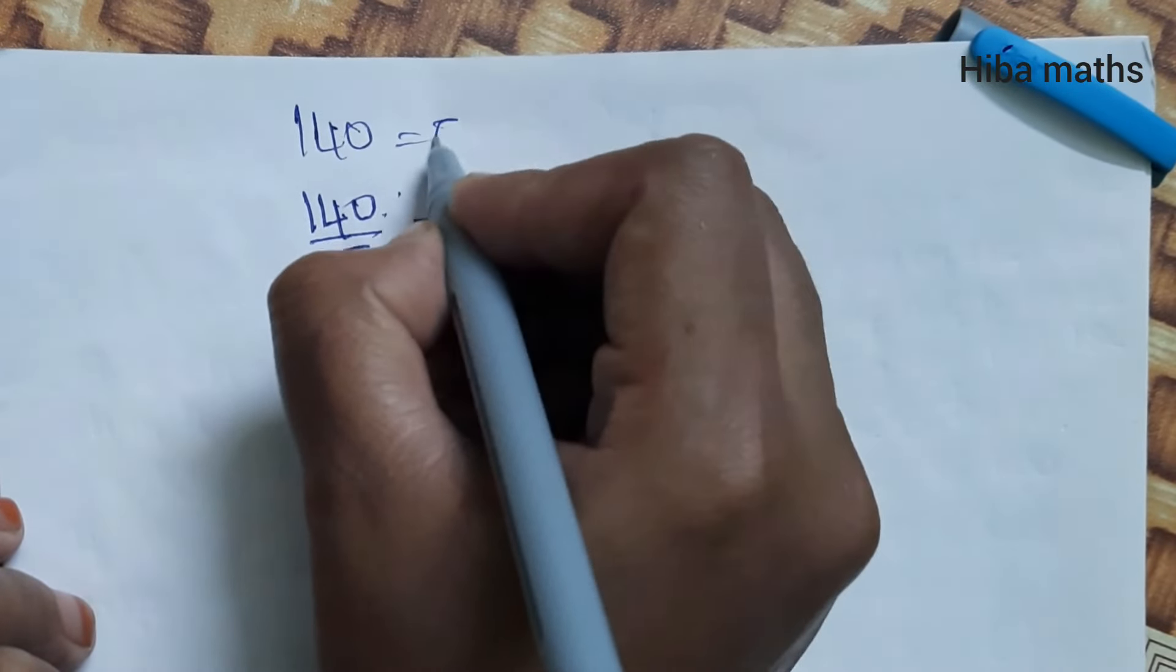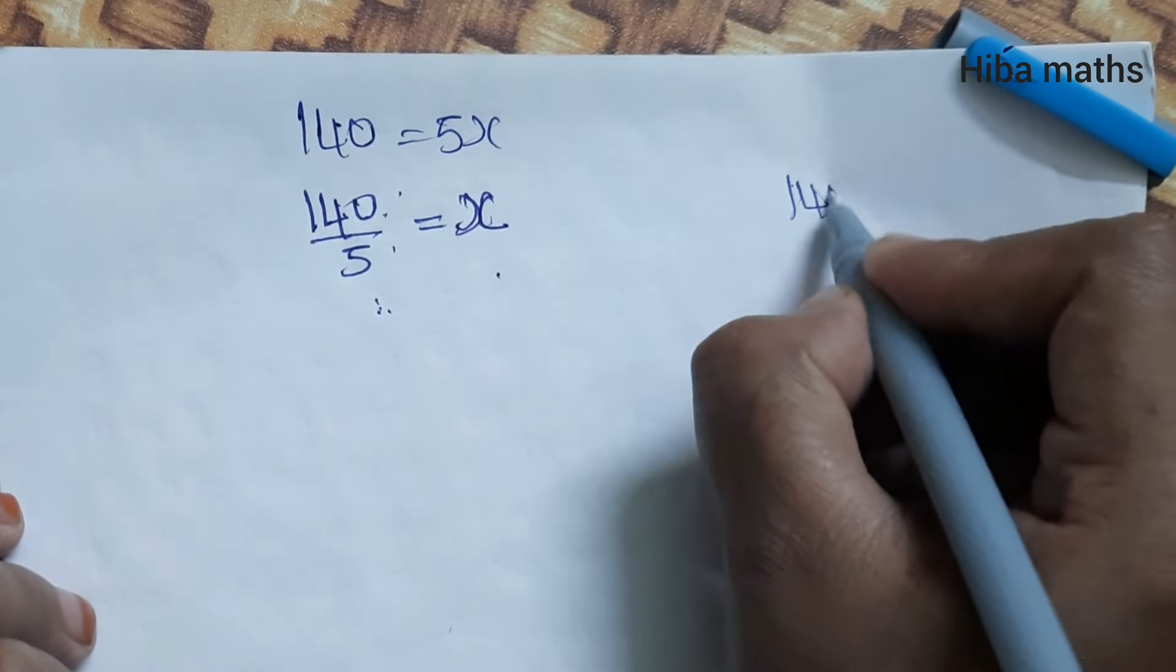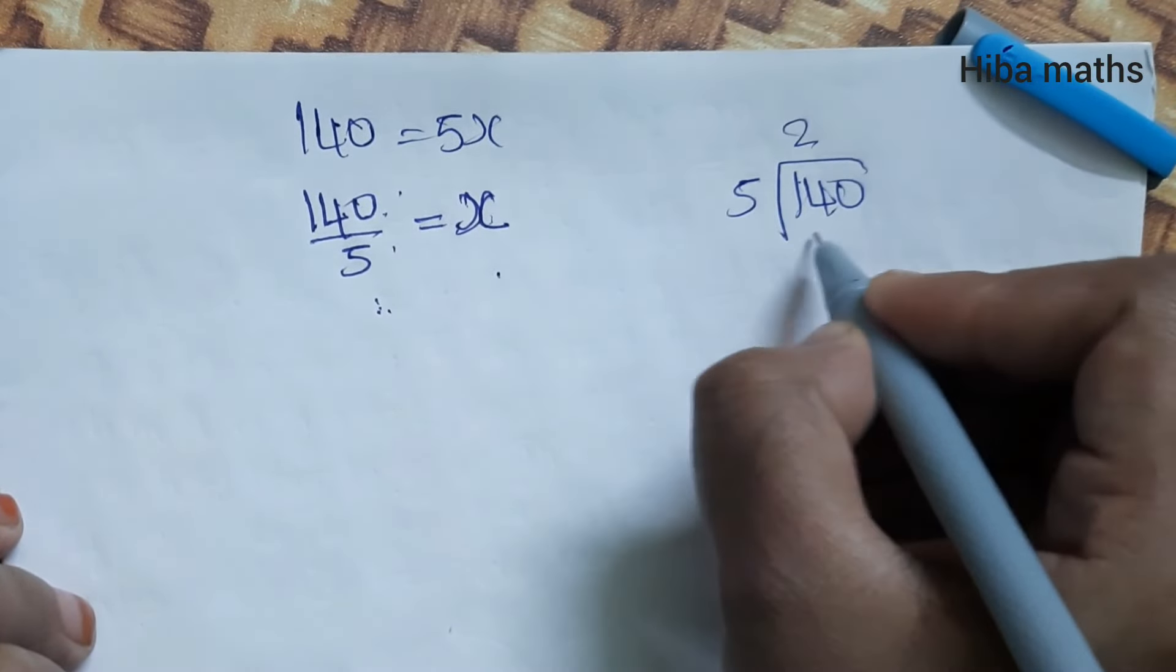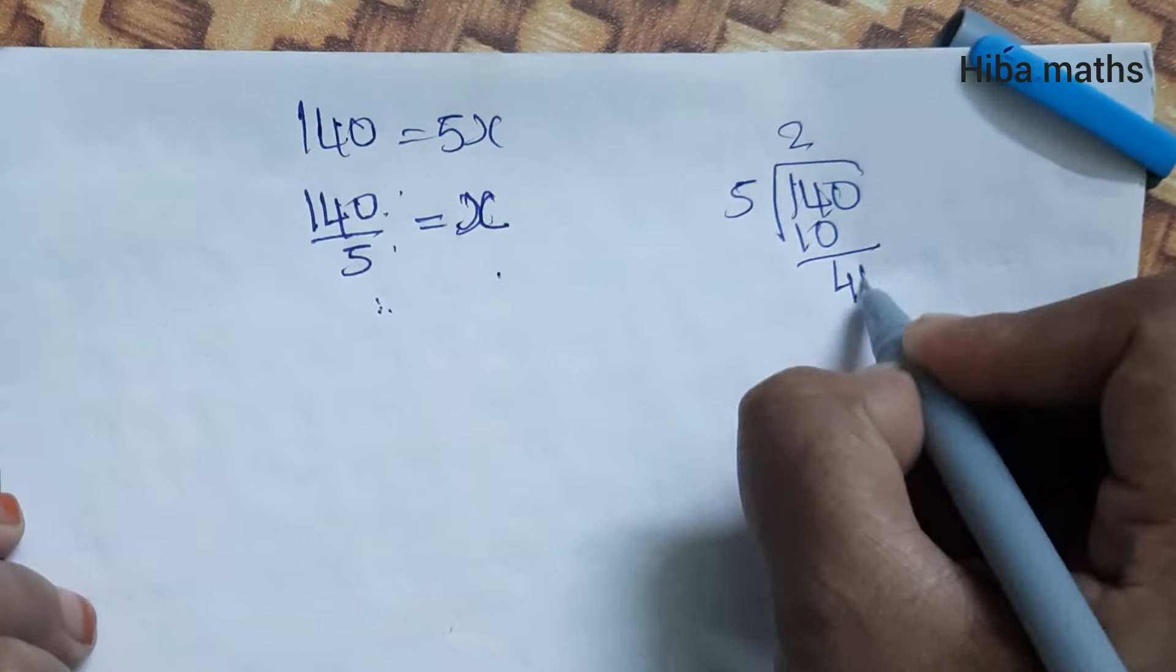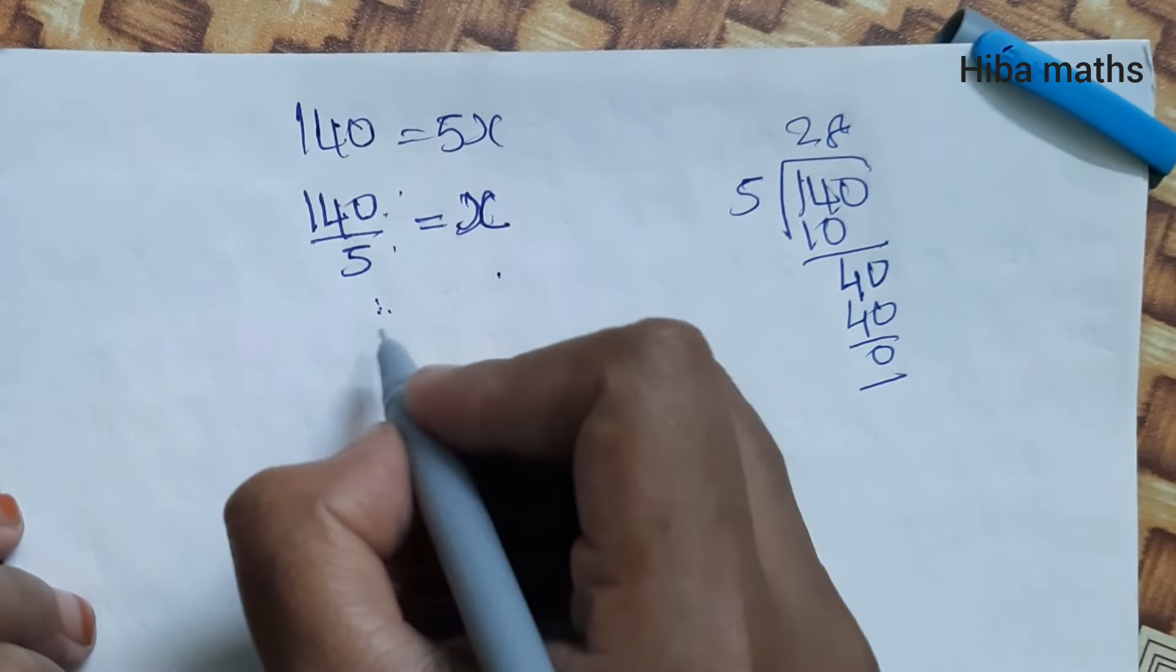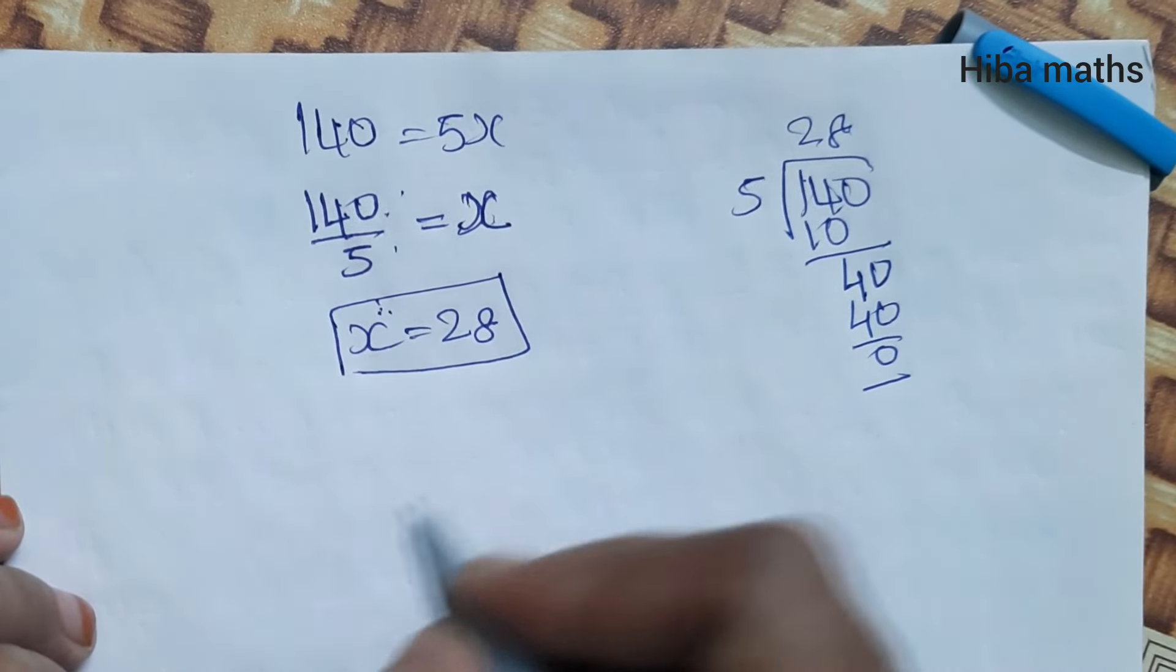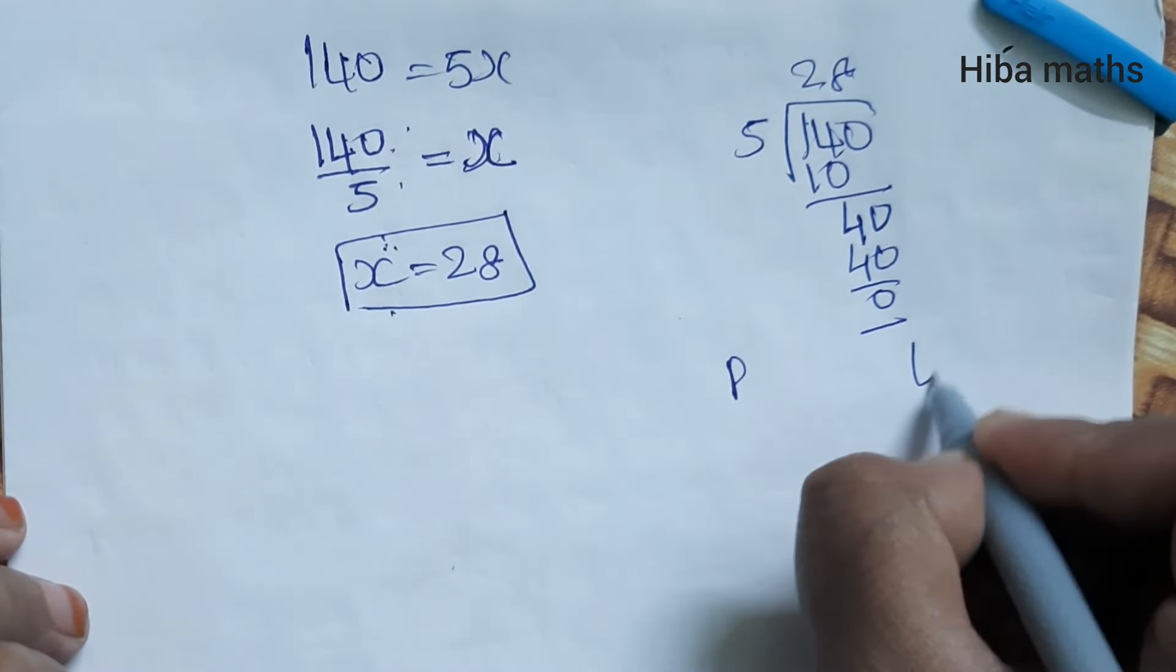140 divided by 5 equals x. 5 goes into 140 twenty-eight times. So x equals 28.